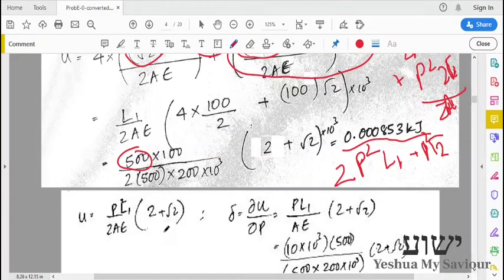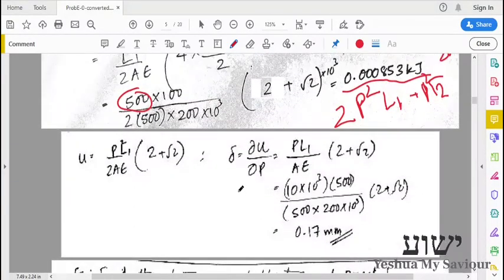You can find the deflection. As I mentioned earlier, this is by Castigliano's first theorem: delta = ∂U/∂P. Finishing the derivative, we will get 2 and 2 will cancel out: P L1/(2E) times (2 + √2). Substituting the values, we will get 0.17 millimeters.